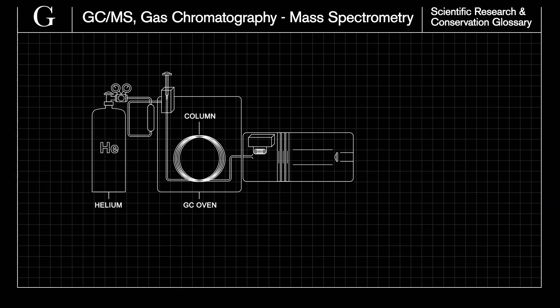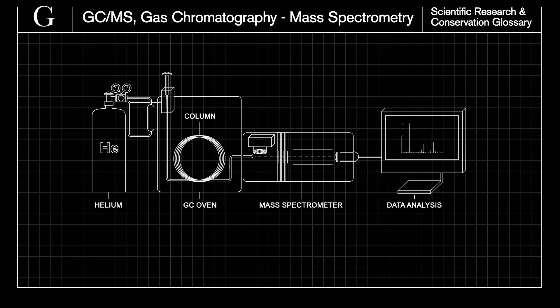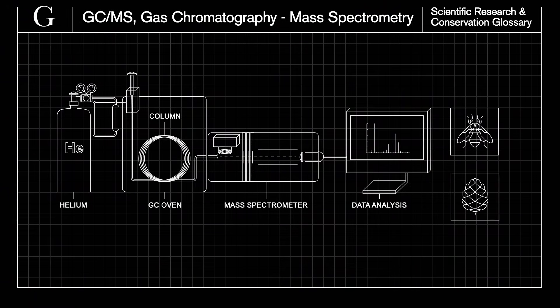The detector here is a mass spectrometer, which splits the chemical compounds into ions, recorded as a mass spectrum, to identify mixtures of materials, for example beeswax and pine resin.